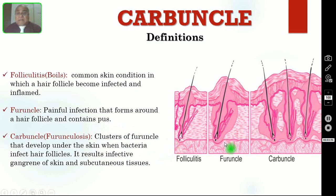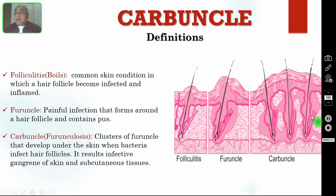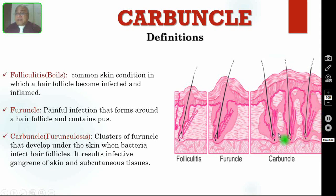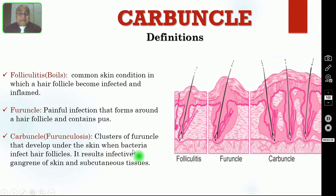Whereas carbuncle is a cluster of many furuncles that develop under the skin when bacteria infect many hair follicles. As you are seeing here, this is a cluster of many furuncles — all these are individual furuncles. Outside you will see a swelling, and inside there is a lot of interconnected pus. Not only pus formation, but the whole soft tissue will become gangrenous and will form slough. Eventually it results in infective gangrene of the skin and subcutaneous tissue as well.